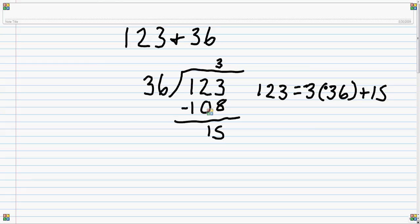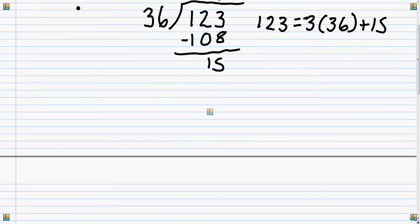But since it didn't, the divisor now becomes the dividend, and the remainder becomes the divisor. So 15 just goes from the remainder to the divisor, and this one goes from the divisor to the dividend, 36.